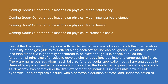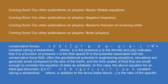In fluid dynamics, for a compressible fluid with a barotropic equation of state and under the action of conservative forces: v²/2 + ∫[p₁ to p] dp/ρ(p) + ψ = constant along a streamline, where p is the pressure, ρ is the density, ρ(p) indicates that it is a function of pressure, v is the flow speed, and ψ is the potential associated with the conservative force field — often the gravitational potential in engineering situations.